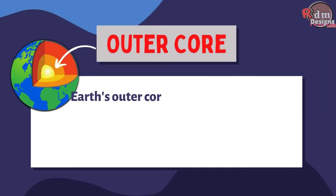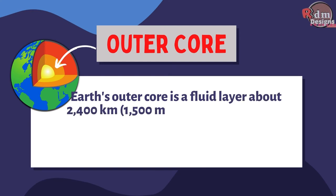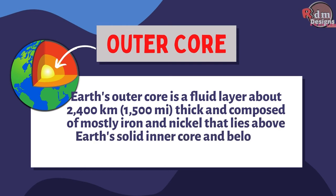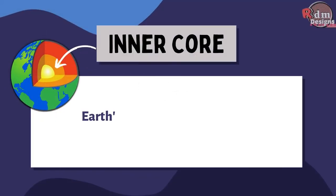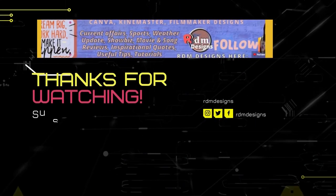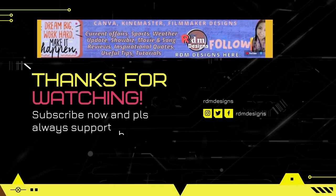The outer core is a fluid layer about 2,400 kilometers thick and composed of mostly iron and nickel that lies above Earth's solid inner core and below its mantle. And the inner core is the innermost geologic layer of the planet Earth. And these are the Earth's structures.